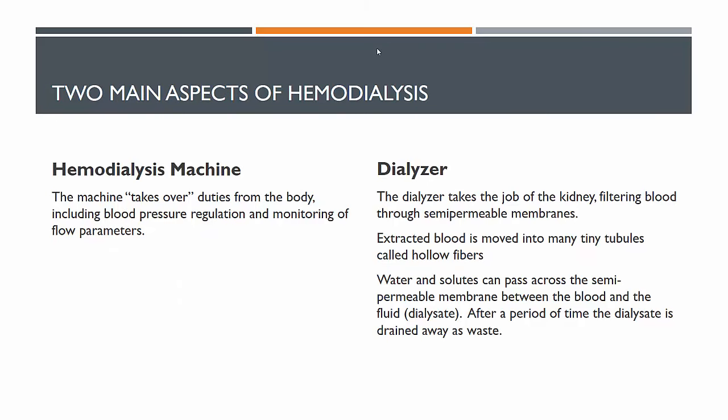There are two key parts of hemodialysis. The hemodialysis machine takes over from the heart in controlling the pace of blood flow, and it monitors blood conditions throughout. The dialyzer is where filtering occurs via a semi-permeable membrane: blood removed from the body is pumped into tiny tubules called hollow fibers, and water and solutes pass across the semi-permeable membrane between the blood and the fluid. After a period, the dialysate is drained away. These are tiny tubules because surface area to volume ratio affects the rate of diffusion — you want lots of little tubes so the most waste can get out.